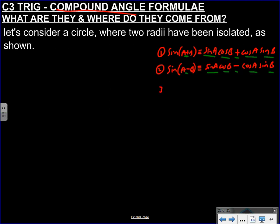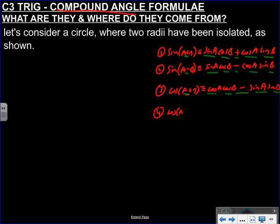For the cosine versions: cos(A+B) is the same as cosA cosB minus sinA sinB - notice the sign switches. And cos(A-B) is cosA cosB plus sinA sinB. So for cosine, we've got cos-cos sine-sine, and the signs are different from what's in the bracket.